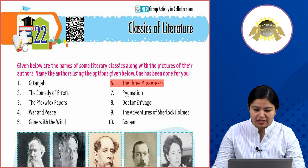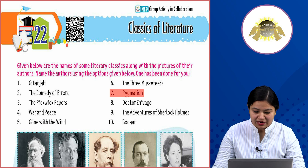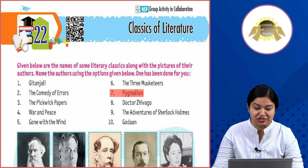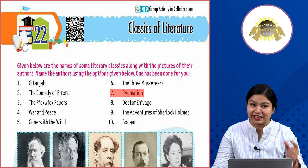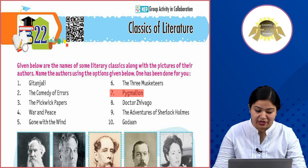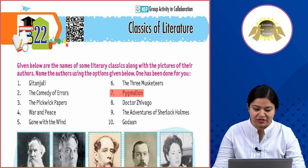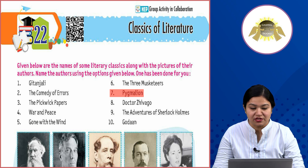Seventh: Pygmalion. Pygmalion was written by George Bernard Shaw. His picture is in the second row — look at the second position. You will write 'seven' for George Bernard Shaw.